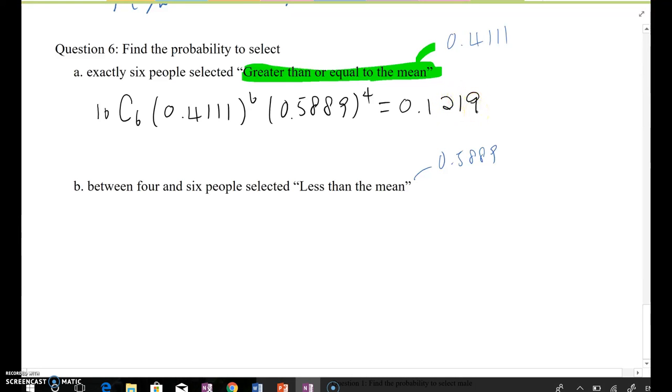Now part B, probability between four and six people selected less than mean. Before we were talking about the greater than or equal to the mean value, but part B is asking less than mean value here. So this one's probability will be our target probability.